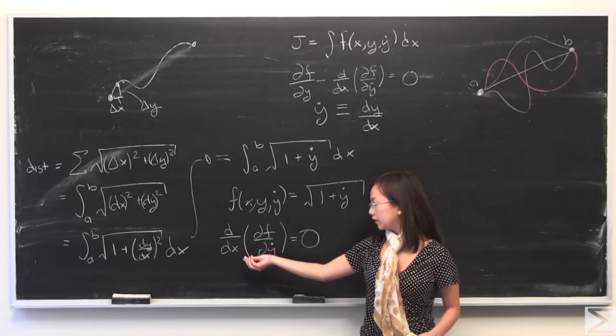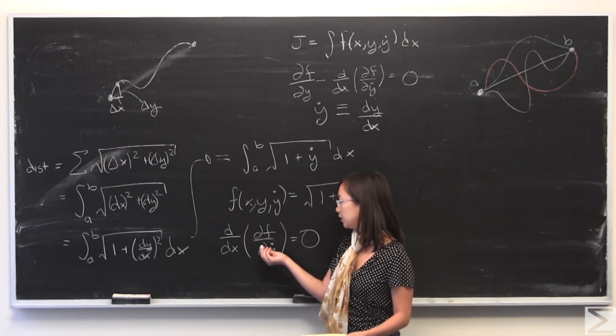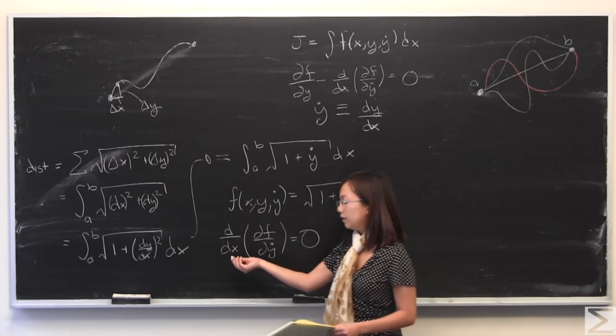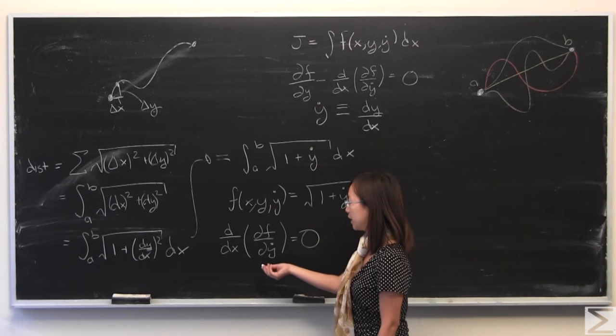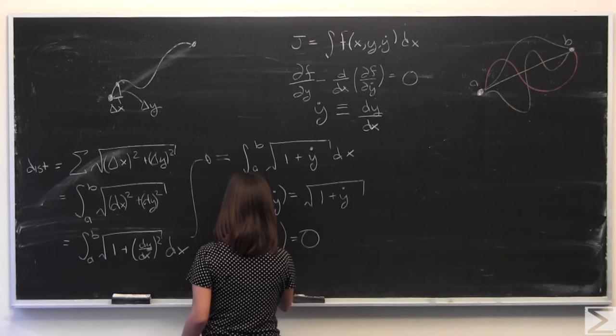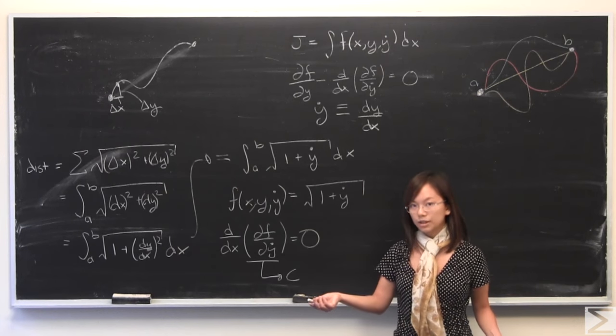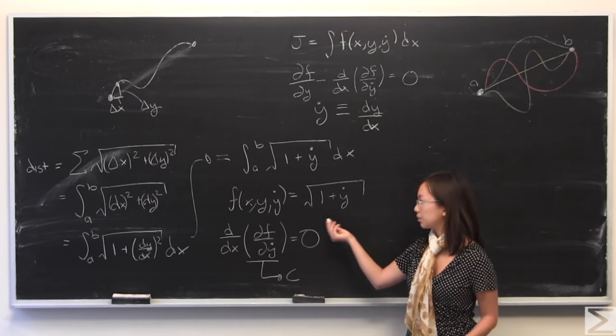Now this is the total derivative of something, this partial of f with respect to y dot. If you have taken a Calc 1 class, you'll know that the total derivative of a constant is equal to 0. So that means we can arbitrarily name this as some constant. I'm going to call it c.